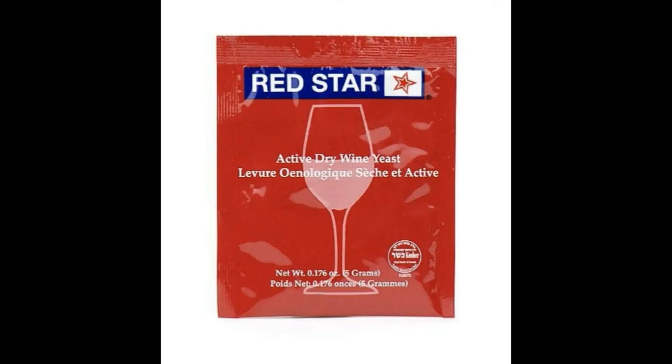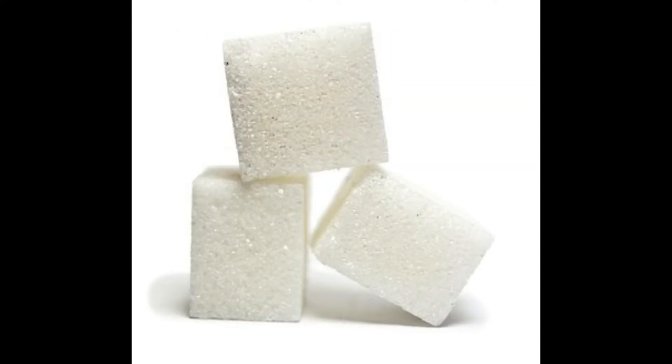Most yeast strains have a known fermentation capacity, and this can be checked before brewing. By checking the fermentation capacity of yeast, the appropriate amount of sugar can be figured out, and then added to the wash.